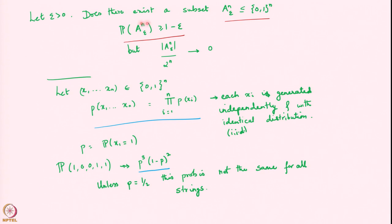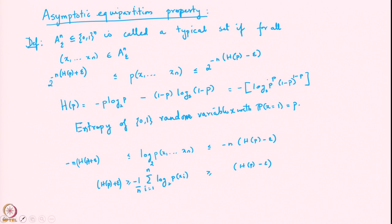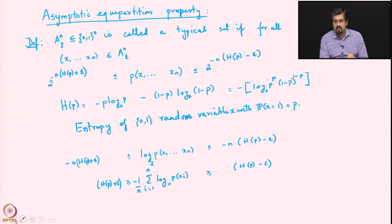For that, we decided we were looking for a subset of the strings we want to store — a subset called A_n_epsilon — whose probability was high. When we recover, this subset is our target. The probability of this set has to be high, but the size of this set as a fraction of the total number of strings has to be small.